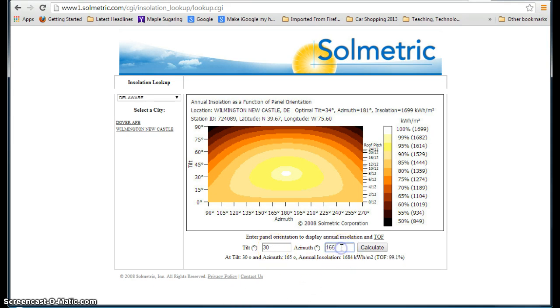Now, let's say I have a west-facing roof. I'm at 270 degrees, so I can just change that. And you can see that's really dropping me down. I'm losing 18%. So you can do that with any tilt and azimuth.